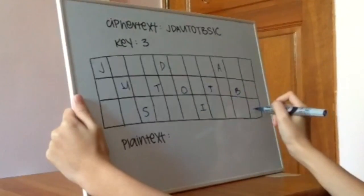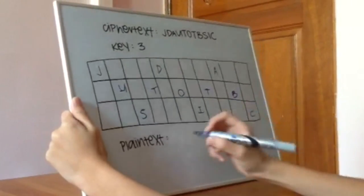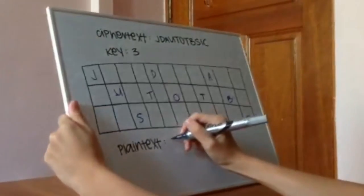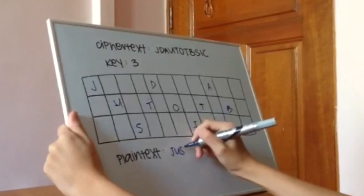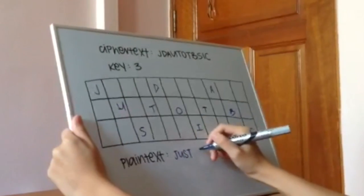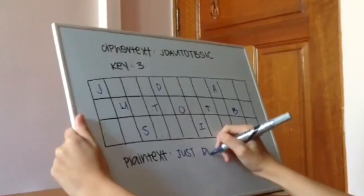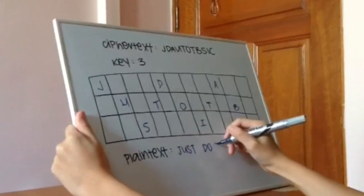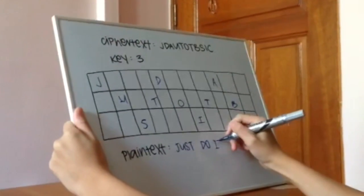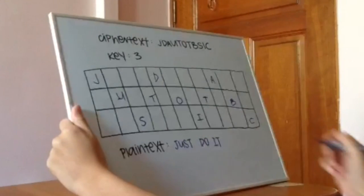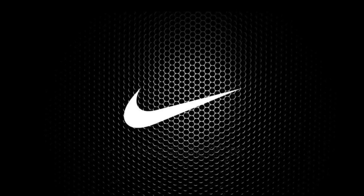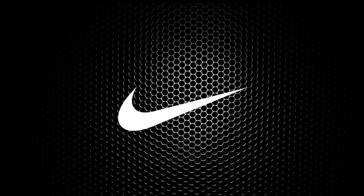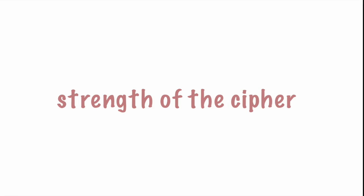Next, we continue by replacing the dashes in the next row with the next letters of the ciphertext. We will then be able to complete the rest of the rows, and read the plaintext of the completed grid following the diagonals. For this example, the message says "just do it."